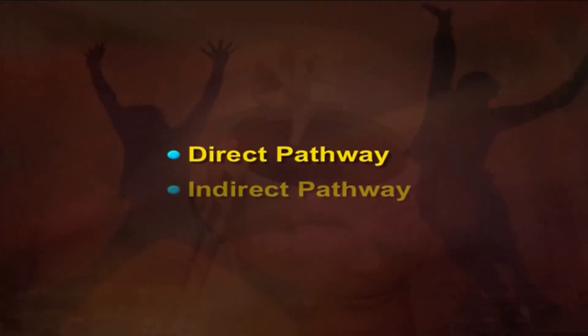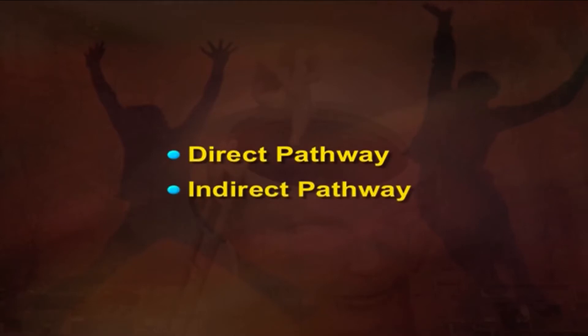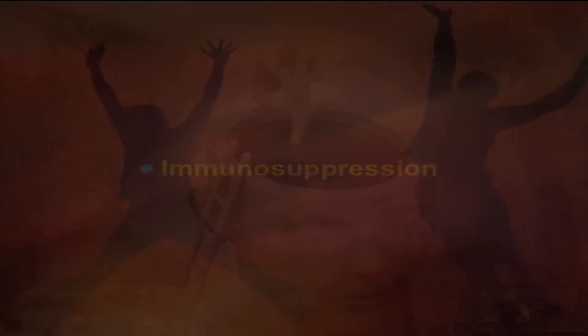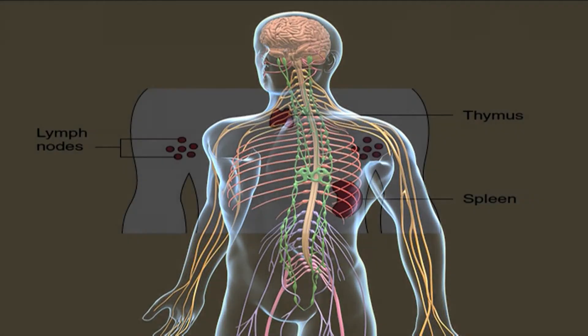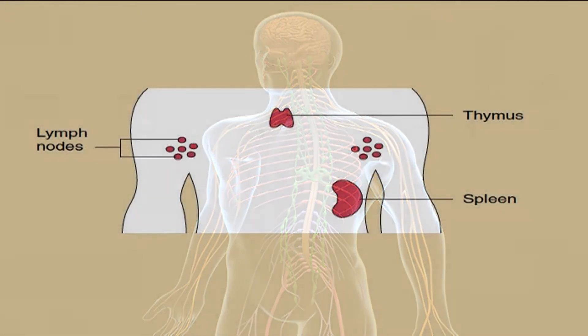Now the influence of stress on disease may actually happen through two pathways. The first is a direct pathway and the second is an indirect pathway. A major element of the direct influence of stress on disease is immunosuppression. Immunosuppression occurs through the activity of the nervous system on the immune system, and this can happen through two routes as you can see in the figure: first is the peripheral nervous system, and the second is the secretion of hormones.